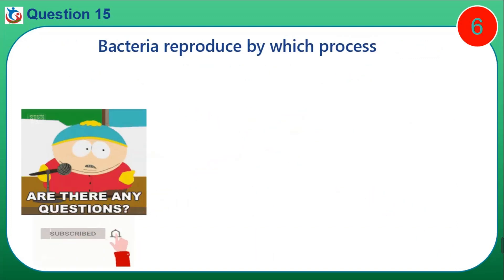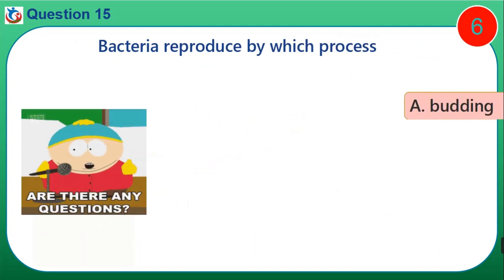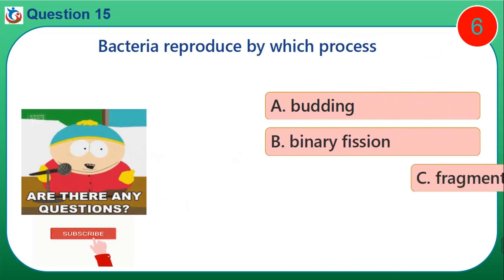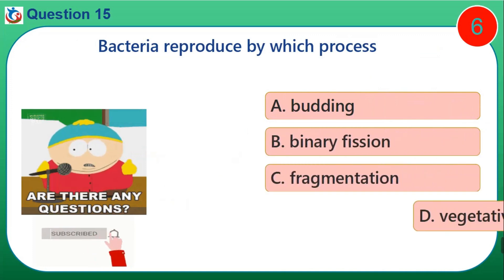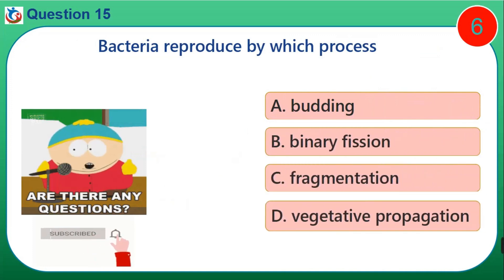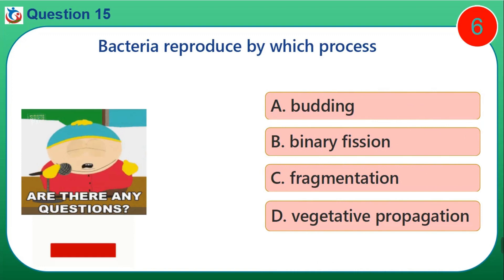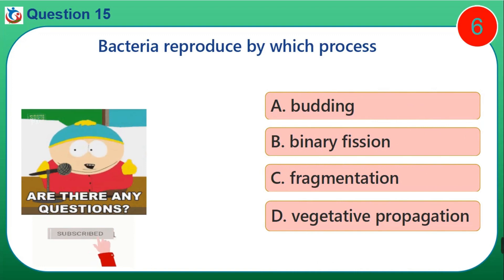Question 15. Bacteria reproduce by which process? A. Budding. B. Binary fission. C. Fragmentation. D. Vegetative propagation.